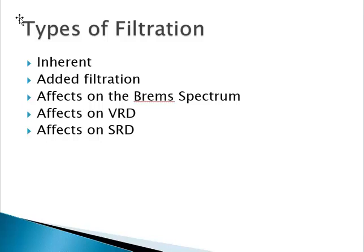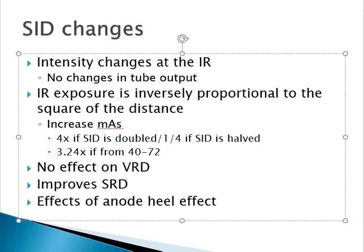Rolling back to SID to clarify a few things: whenever we change SID, there is a change in intensity to the image receptor, even though there's no change to tube output — unless we're phototiming or unless we make a change to mass or KVP. Changes in SID are independent of changes in tube output.